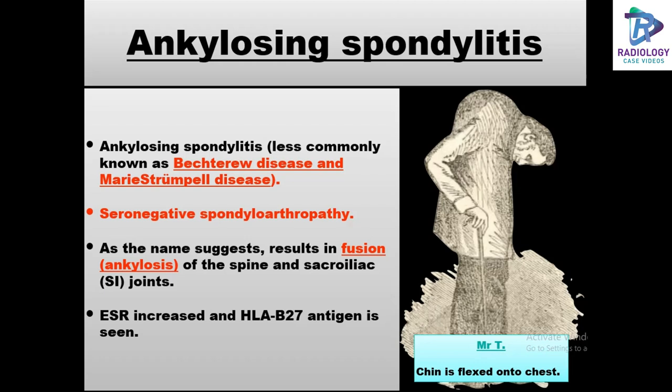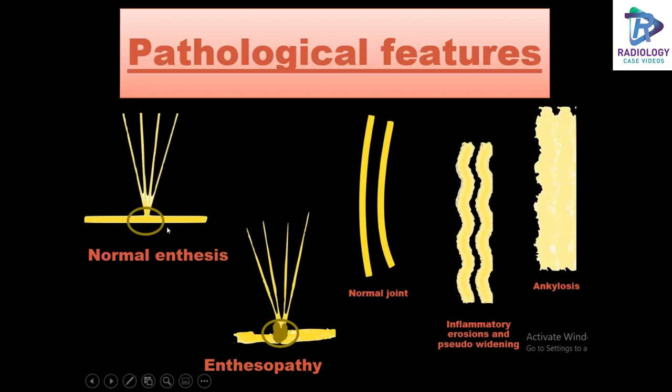Coming to the pathological features, enthesis is where a tendon or a ligament meets the bone. A disorder of the enthesis, that is enthesopathy, can incorporate tendinopathy, bursitis, cyst-like erosions, calcifications, enthesophytes, and osteitis.